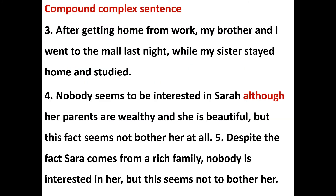Once again with the compound complex sentence: after getting home from work — meaning after my brother got home from work — my brother and I went to the mall last night, while my sister stayed home and studied. This is a reduced clause meaning 'after my brother and I had got home from work.' The dependent clause 'after getting home from work' doesn't carry the main meaning. 'My brother and I went to the mall last night' is the independent clause — it has a complete idea and complete thought. 'While my sister stayed home and studied' — 'while' is a contrastive subordinating conjunction, and this is the dependent clause.